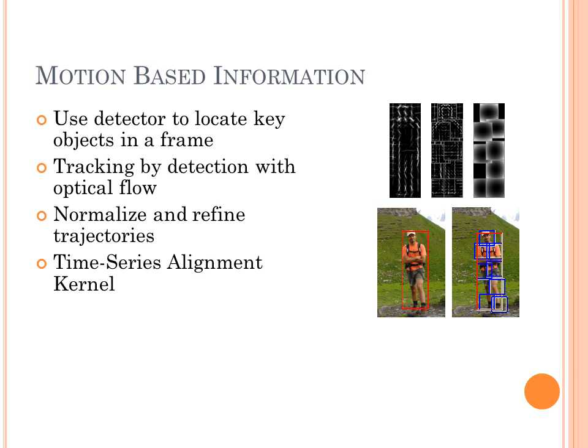In order to extract motion information from videos, we must first detect objects of interest. We train models like the one shown on the top right for full human body detection and also hand detection. Once we can detect objects with confidence, we use a modification of a method known as tracking by detection to construct trajectories for our key objects.